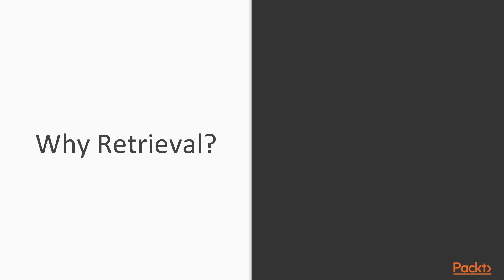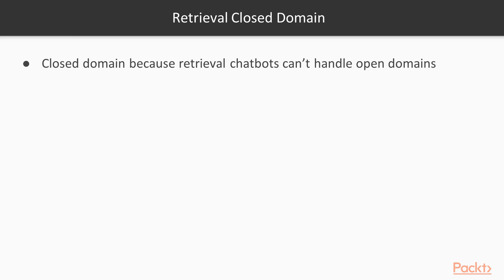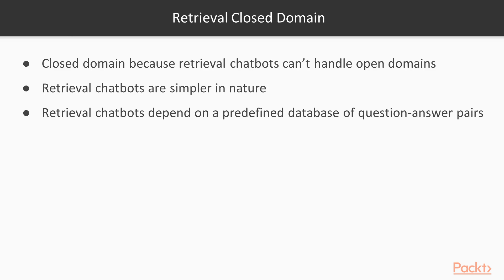For our first bot, we're going to use retrieval chatbots. Why? Because retrieval chatbots provide no grammatical mistakes, no irrelevant answers, and need less data to work. We're also going to use a closed domain dataset, because retrieval chatbots can't handle open domains. Retrieval chatbots are simple, depend on a predefined database of question-answer pairs, and are good for frequently asked questions.